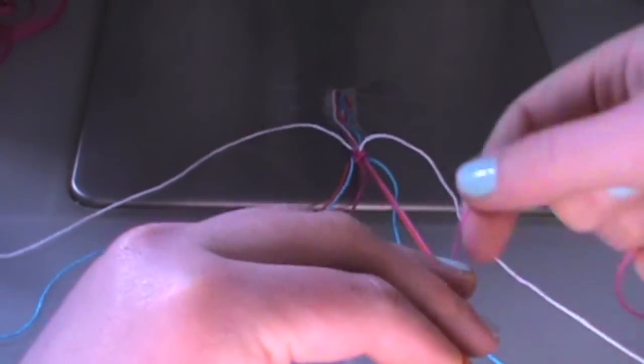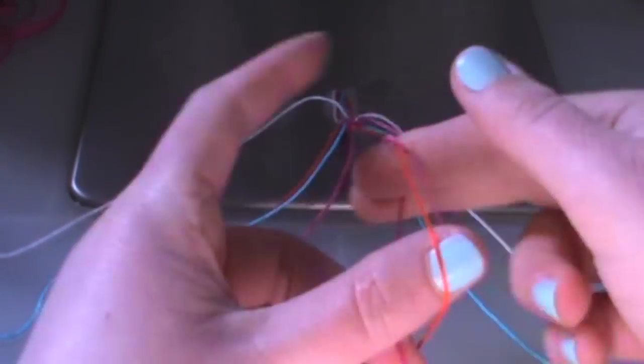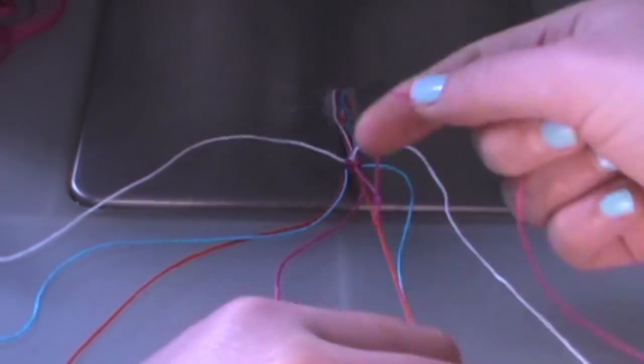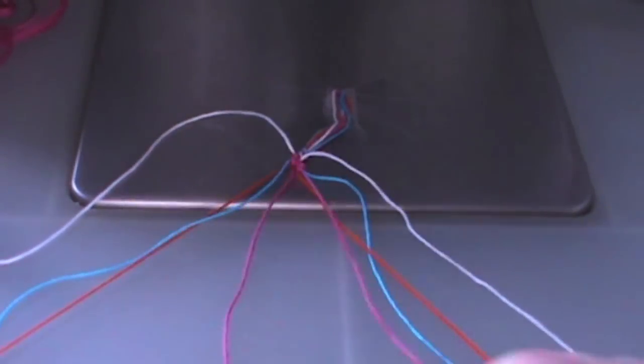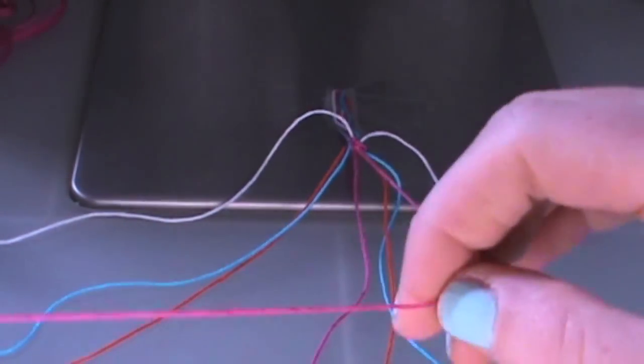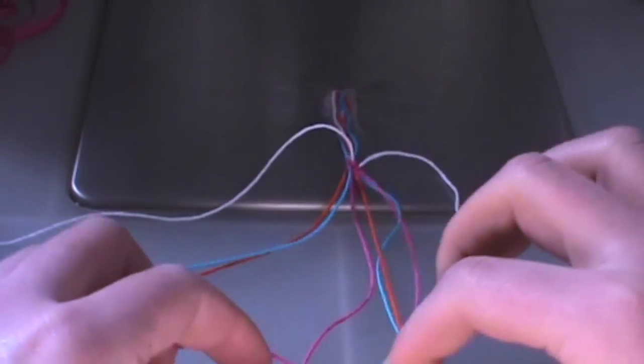Pull it through, make a knot. Back to front four, pull it through, make a knot. Then we have two pink strands in the center and we have to knot those two together.